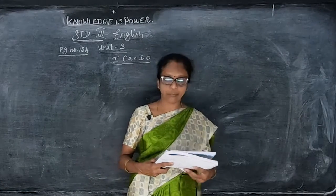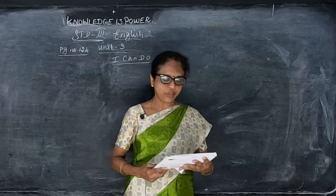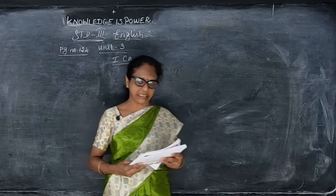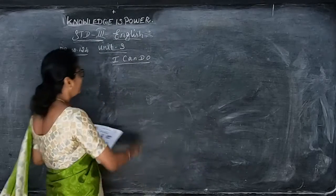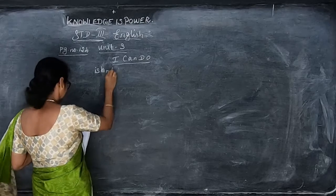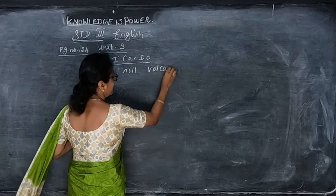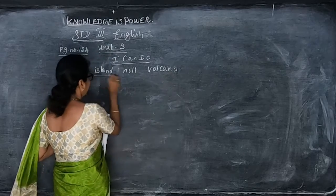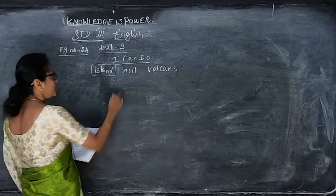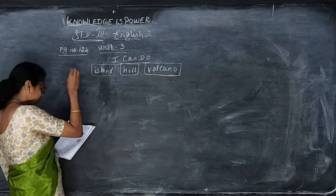Okay children, now we are going to see page number 124. They are given some pictures — look at the picture and write its name. At the top, they are given the words: island, hill, and volcano. You have to see the picture and write the answer under the picture.